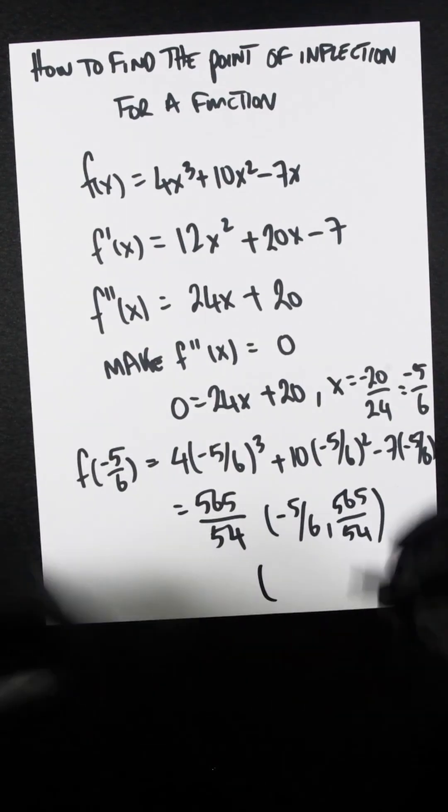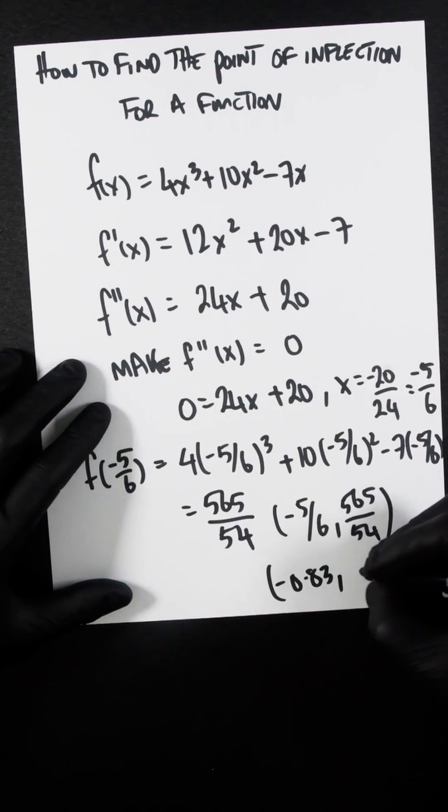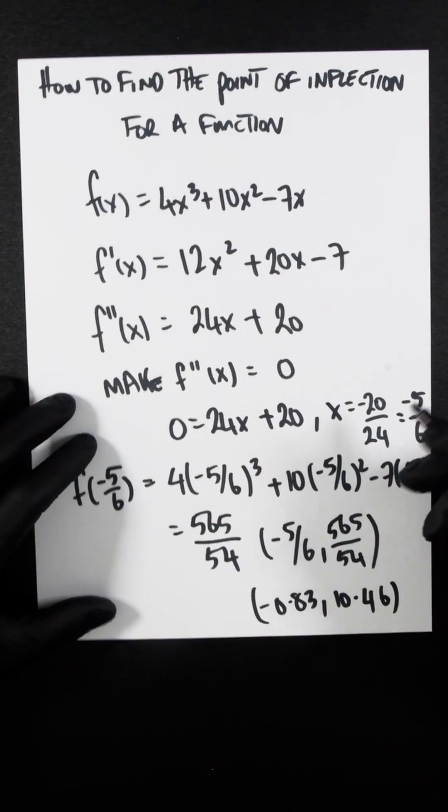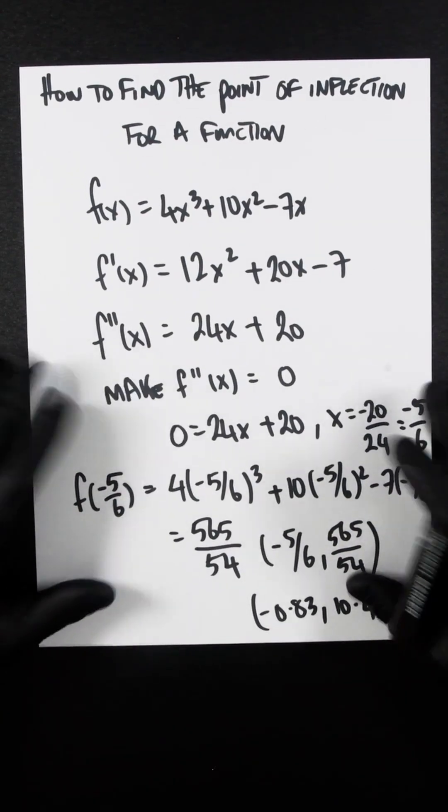However, whenever I see fractions, sometimes it's quite difficult to represent or see in your mind. So that is -0.83 for -5/6, and then that is 10.46. That's the point of inflection for a function.